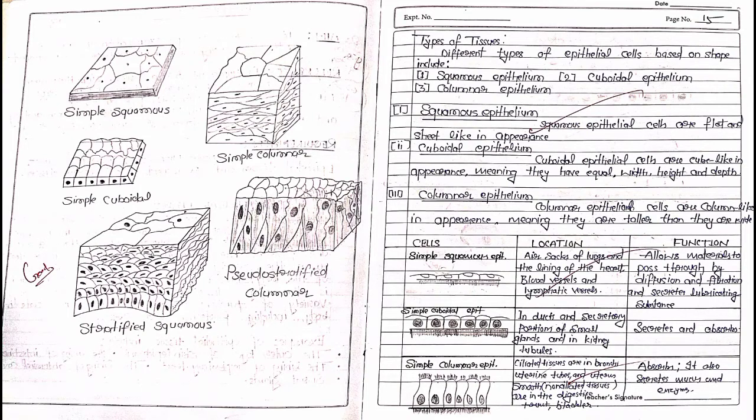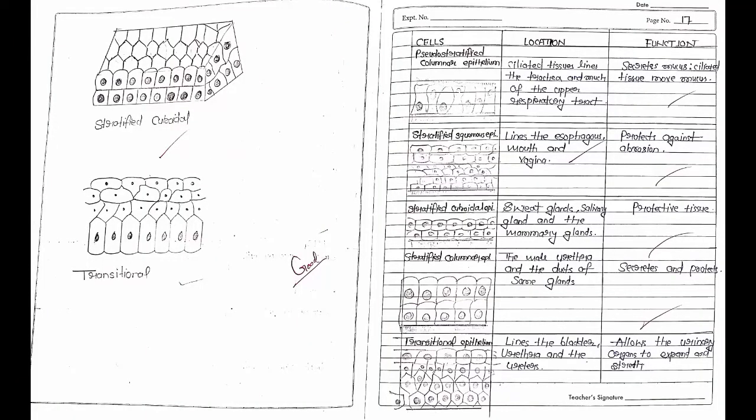Different types of epithelial cells based on shape include squamous epithelium, cuboidal epithelium, and columnar epithelium. The right side describes the theory and left side shows the figures. Here are eight types of columnar epithelium tissue that are presented by cells, location, and function.